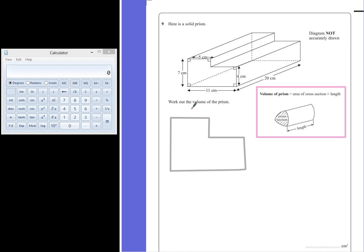Now some of the measurements we are told on here: the top is 5cm, the left hand side is 7, the right hand side here is 4cm, and the total distance across the bottom is 11.